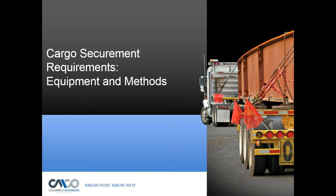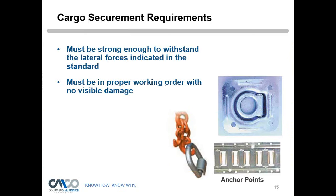For cargo requirements, the equipment and methods must be strong enough to withstand lateral forces. There are different types of anchor points on trailers — D-rings, logistic rails, rings bolted to the floor, deck, or side panels of a truck interior. These are all there for you to use as anchor points. Cargo can also be placed up against the headboard or bulkhead of the truck.